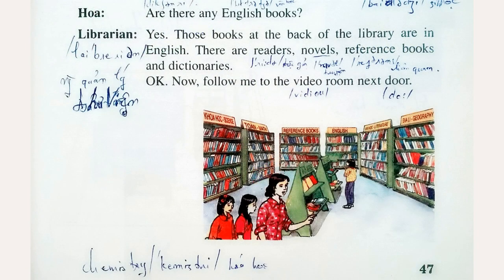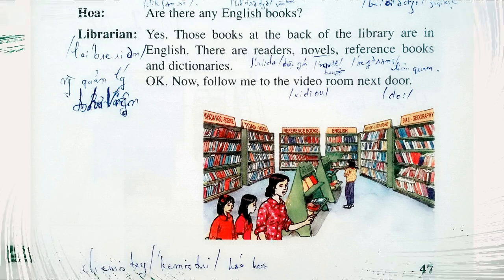Are there any English books? Yes — those books at the back of the library are in English. There are readers, novels, reference books, and dictionaries. Okay, now follow me into the video room next door.